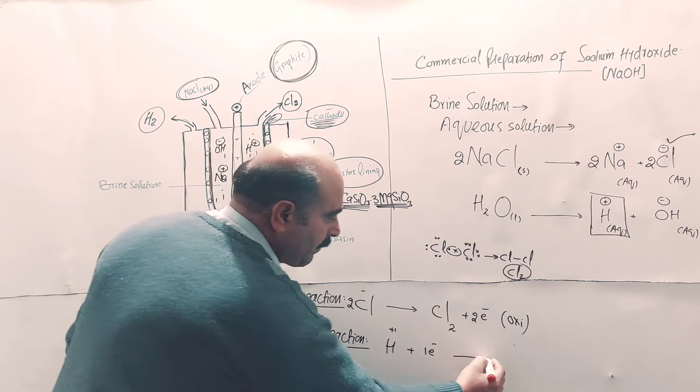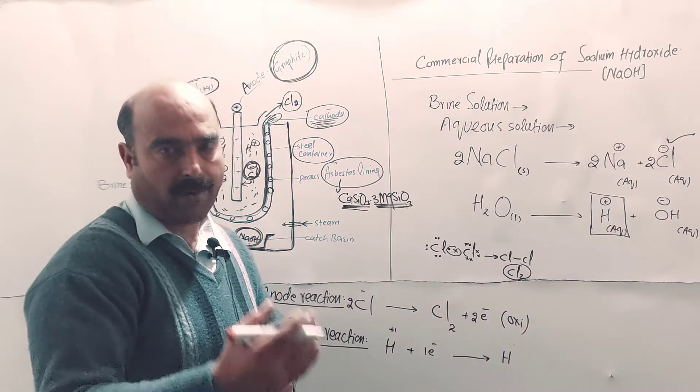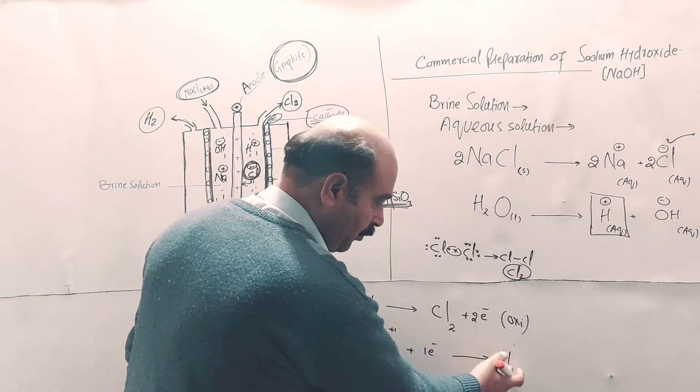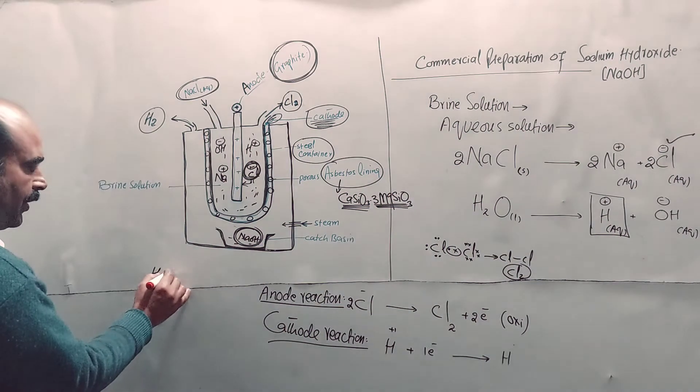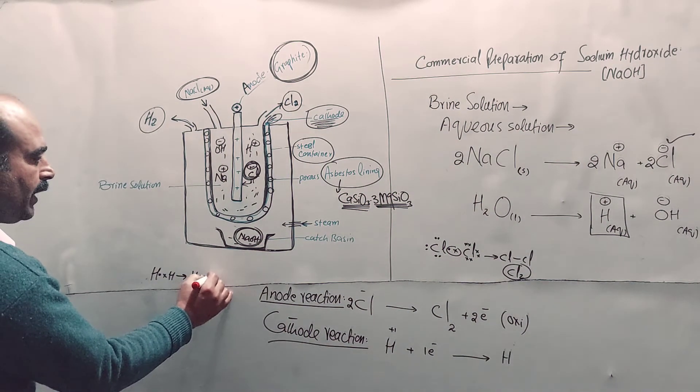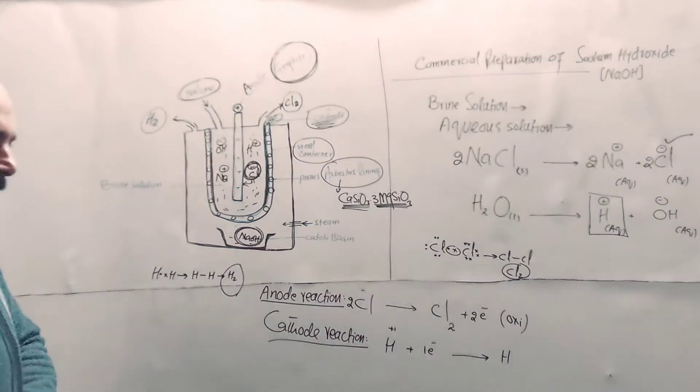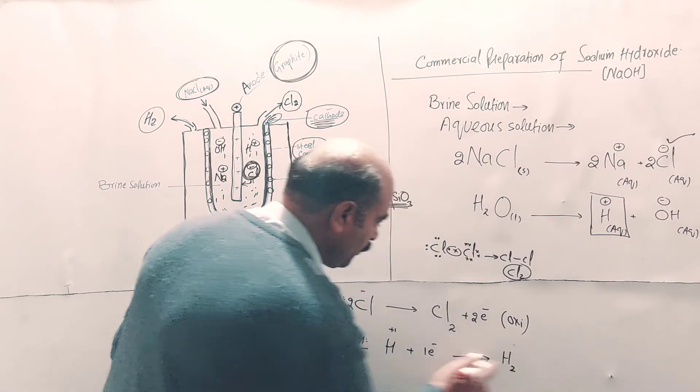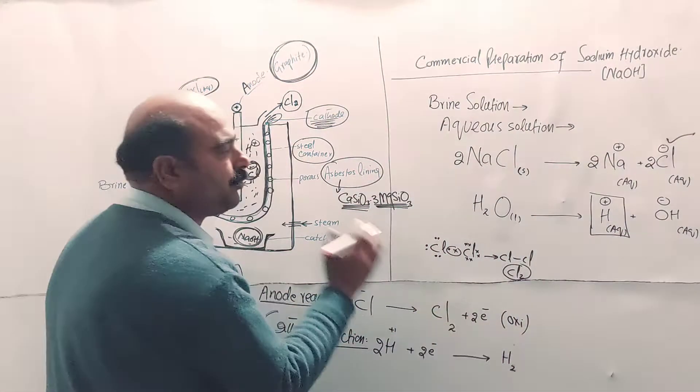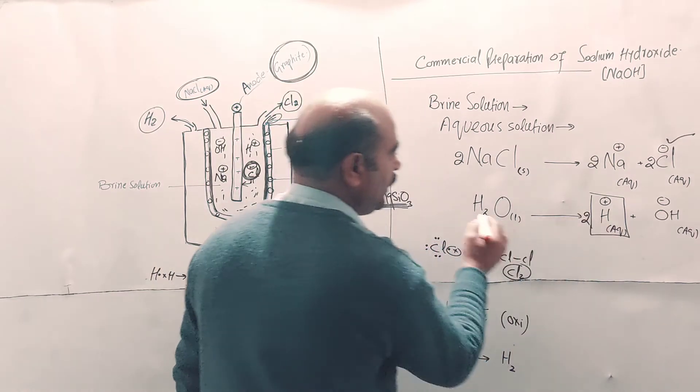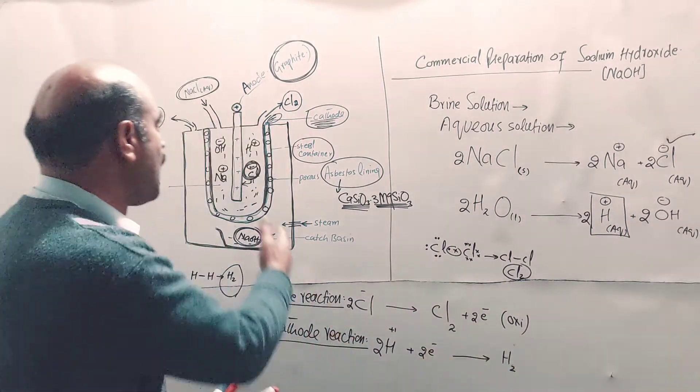Hydrogen ions gain the electrons that chloride ions lost at the anode, and hydrogen atoms are formed. Again, hydrogen can't exist in atomic state with only one electron. Two hydrogen atoms share one electron each, equal sharing of two electrons forms a single covalent bond, and hydrogen atoms are converted into hydrogen molecules. It will be multiplied by two - two hydrogen ions gain two electrons to form one hydrogen molecule. The hydrogen gas is released through the outlet into cylinders.